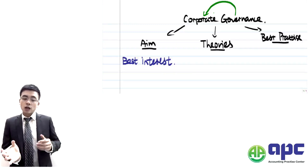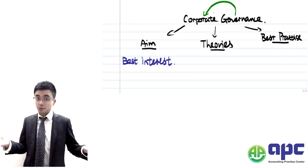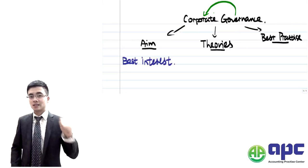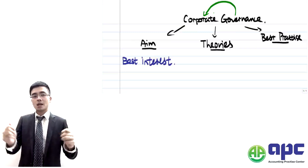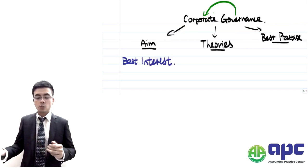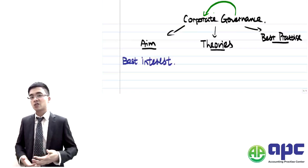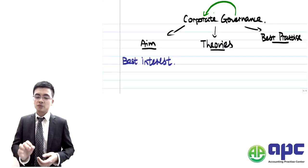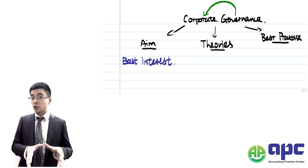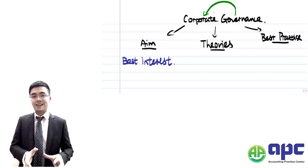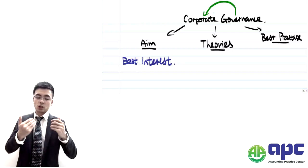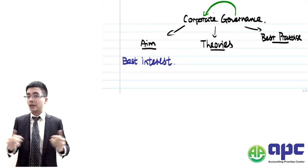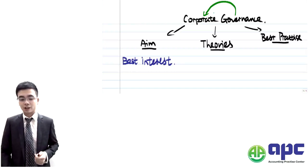We're going to have to follow corporate governance best practices. For example, we're going to split the role between the CEO and the chairman, set up the audit committee, and set up a good internal control system to prevent fraudulent transactions happening within the organisation. The overall aim of corporate governance is to make the directors work in the best interest of the company or the shareholders.